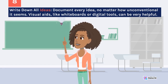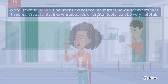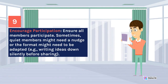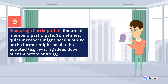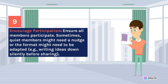Visual aids, like whiteboards or digital tools, can be very helpful. Encourage participation: ensure all members participate. Sometimes quiet members might need a nudge, or the format might need to be adapted — for example, writing ideas down silently before sharing.